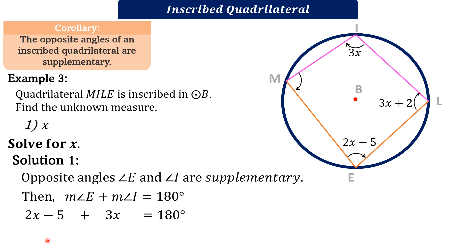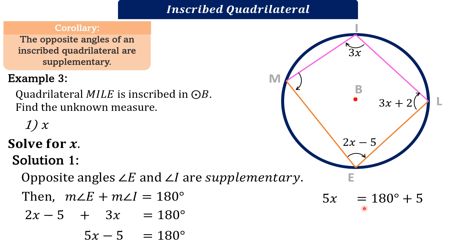Substituting the given values, angle E measures 2X minus 5. By combining like terms, 2X plus 3X is 5X minus 5 equals 180 degrees. Then 5X equals 185. Dividing both sides by 5, therefore the value of X is 37.